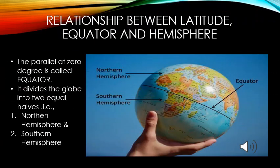Let us see the relationship between the latitude, equator, and hemisphere. The parallel at zero degrees is called the equator, as it divides the globe into two equal halves — that is, the northern hemisphere and the southern hemisphere.